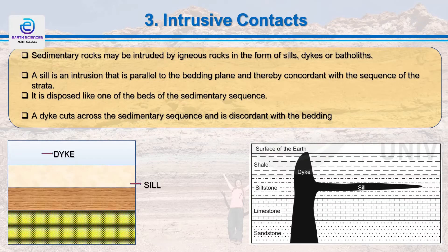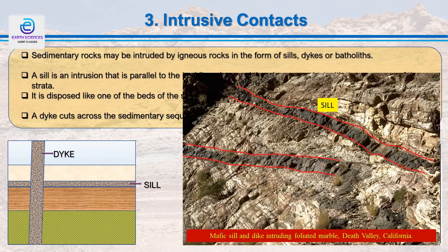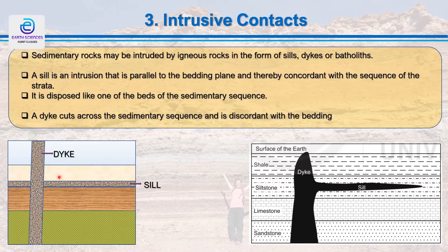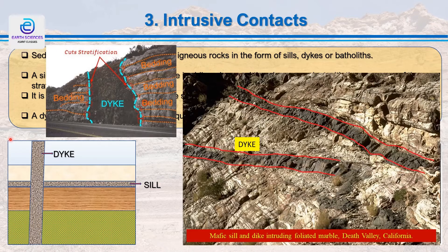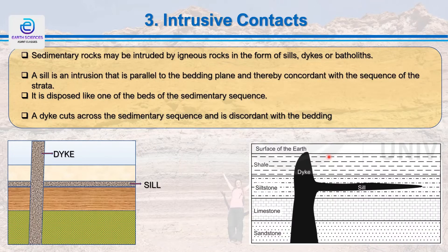The third type of contact is the intrusive contact. A sedimentary rock may be intruded by igneous rocks in the form of sills, dikes, and batholiths. A sill is an intrusion that is parallel to the strata, so it shows a concordant relationship with the rock layers. Whereas a dike cuts across the strata, so it shows a discordant relationship with the sedimentary sequence.